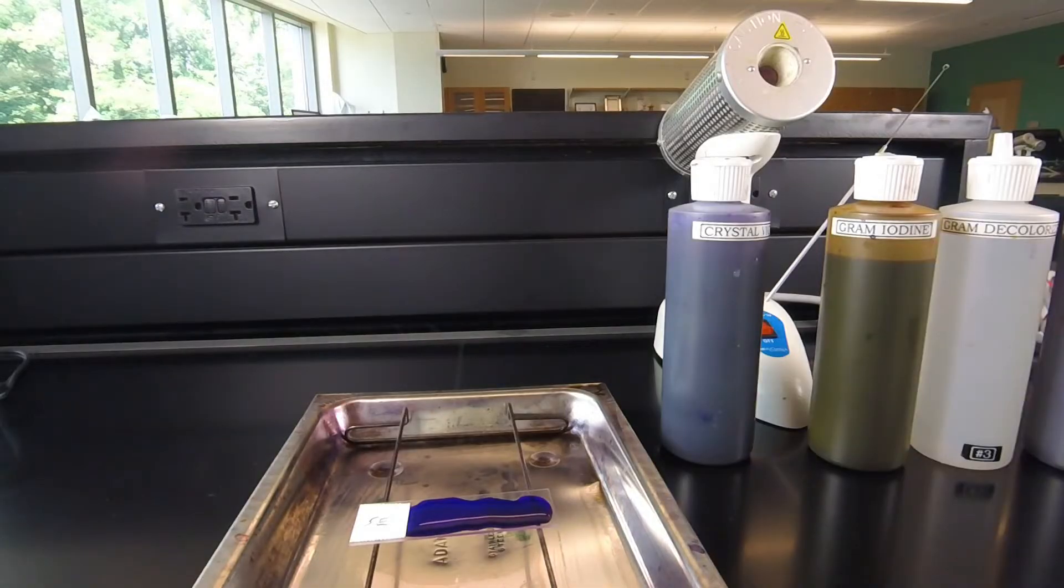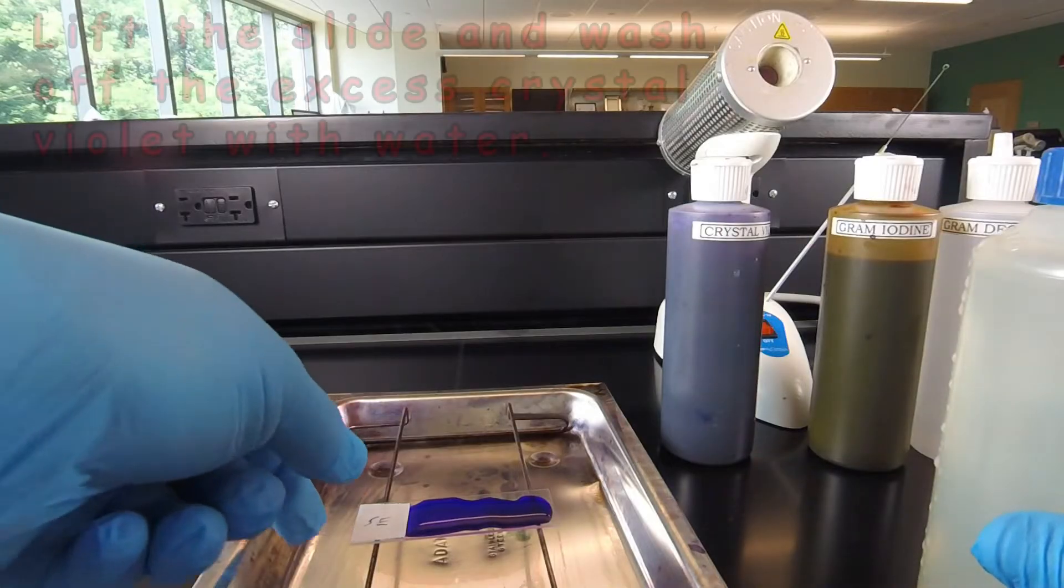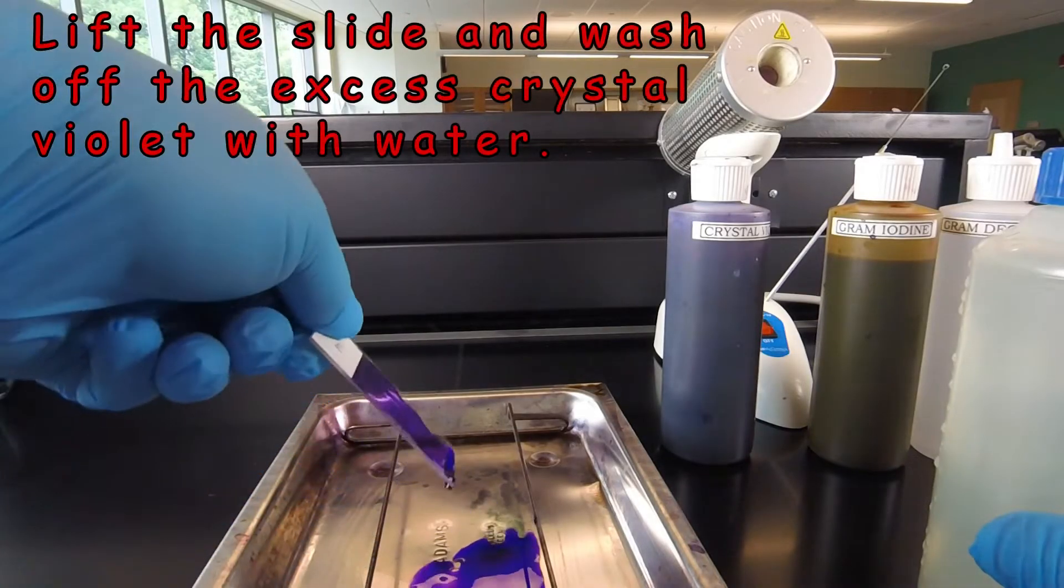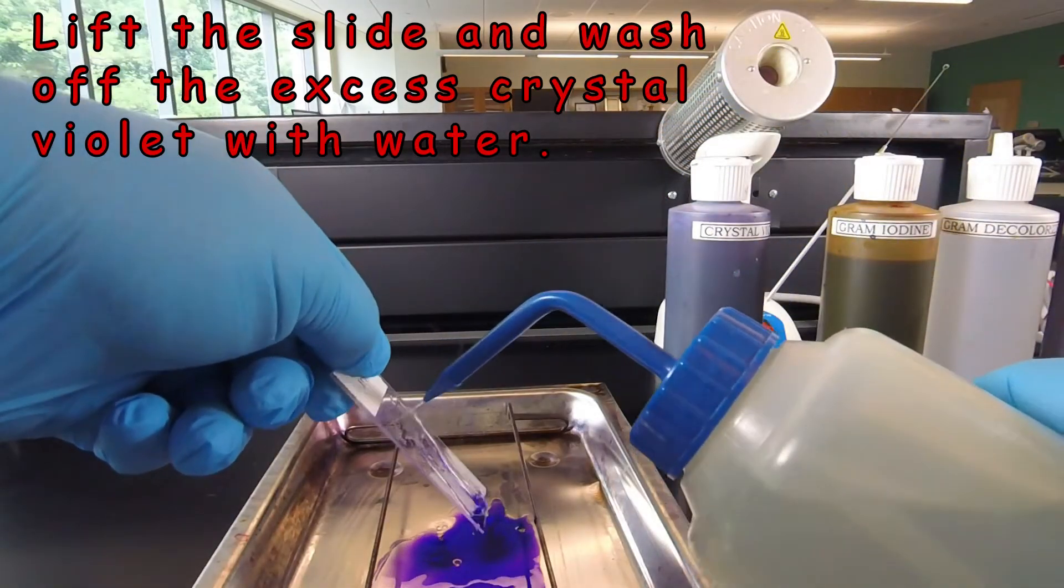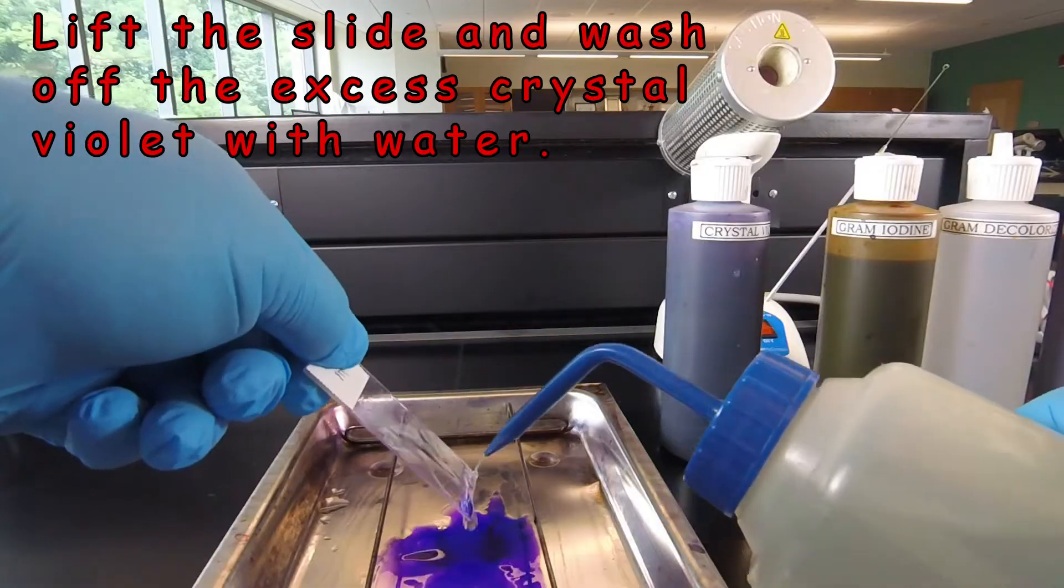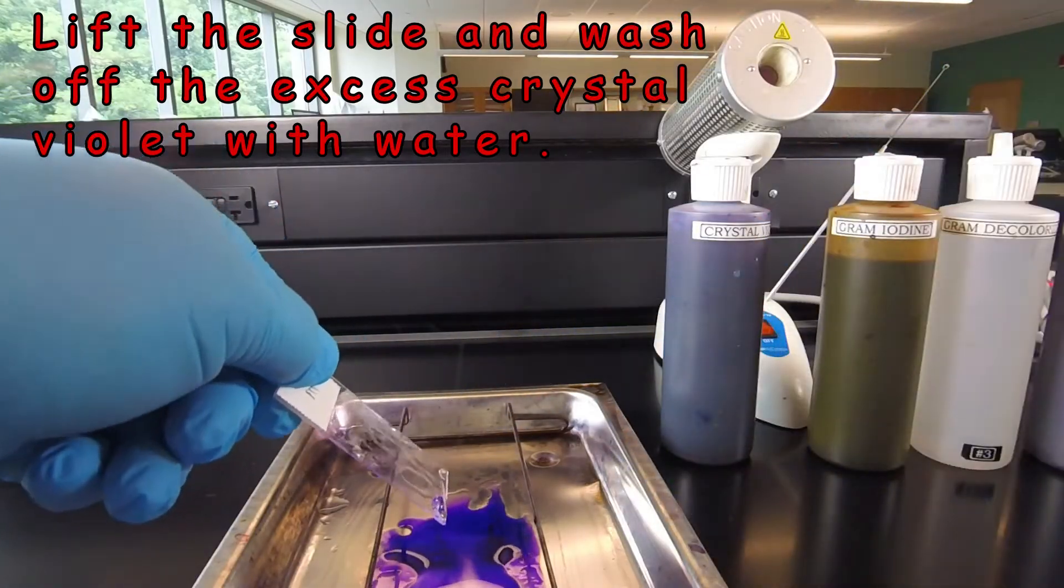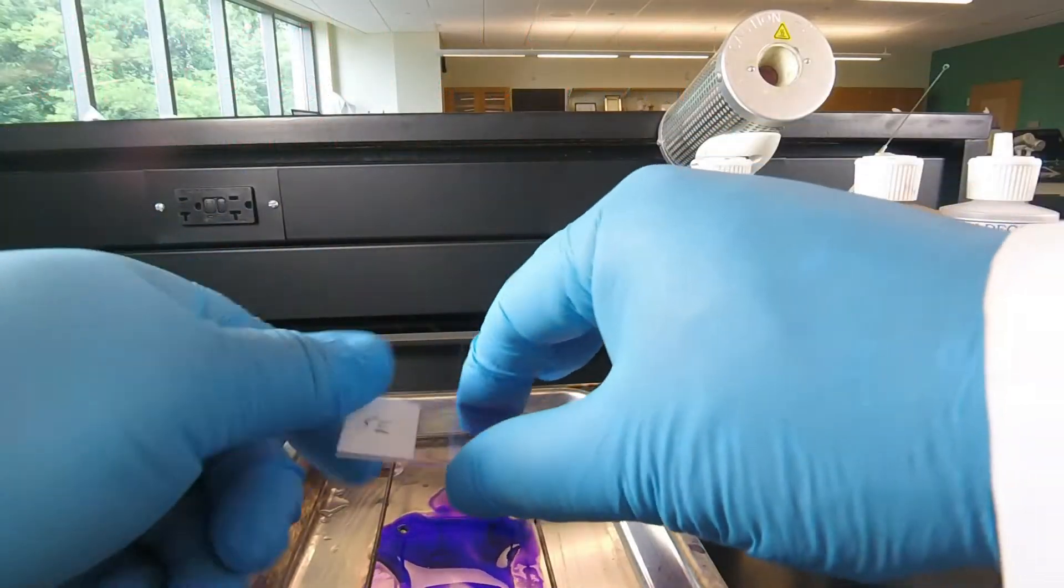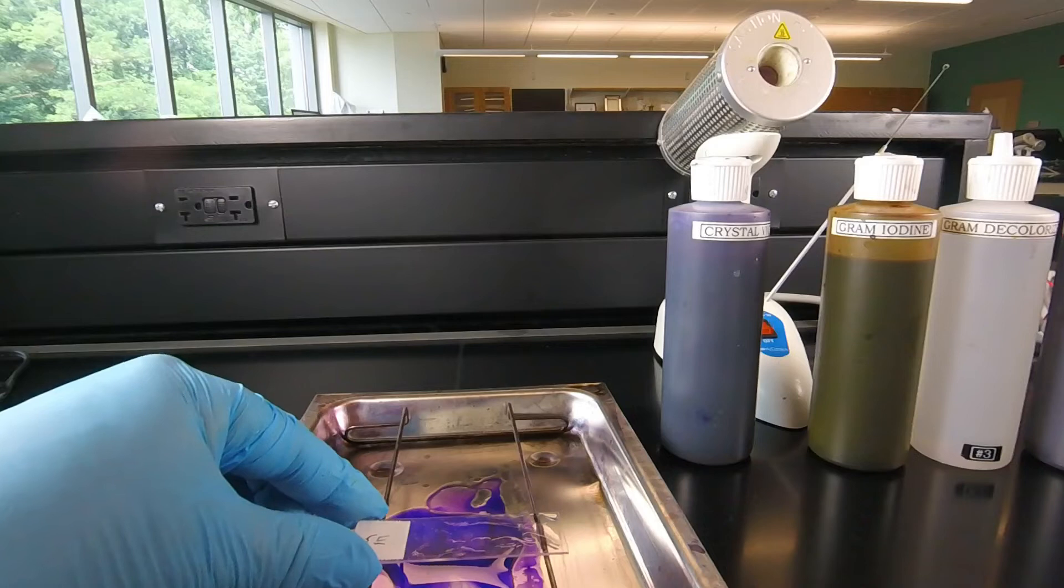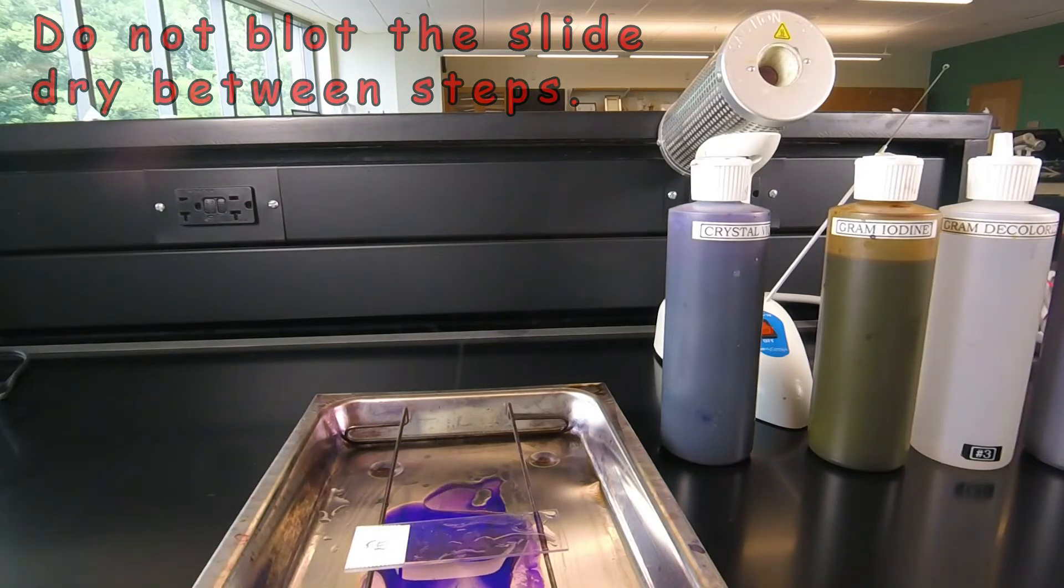A minute has gone by. We're ready to wash off the excess crystal violet with deionized water. We pick up the slide by the label, hold it over the staining tray, and direct the water at the top of the smear, letting it run down over the slide while watching the bottom. As soon as the purple starts flowing off, we shake off the excess dye, put the slide back on our staining tray. We don't blot dry between steps; we simply go on to the next step.